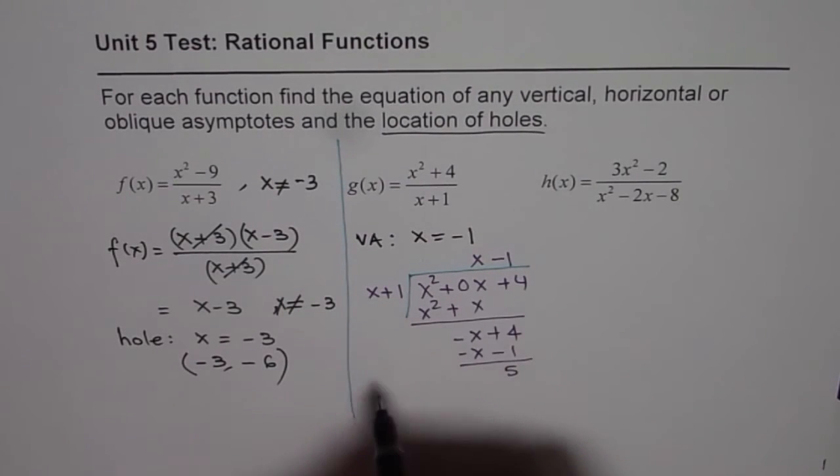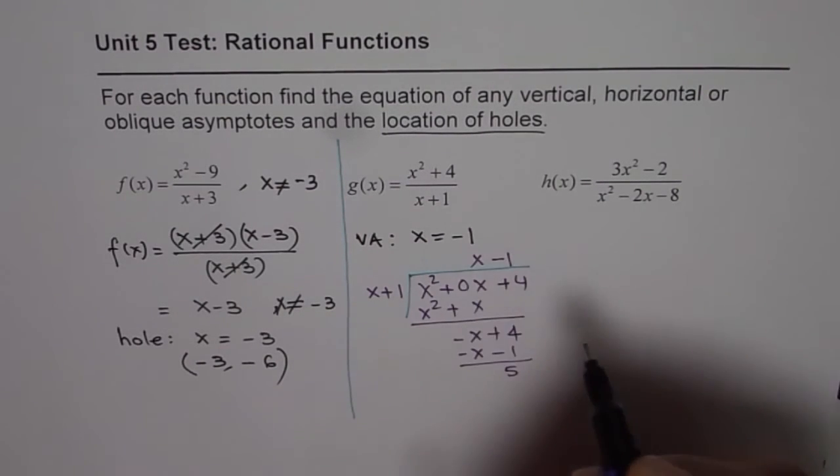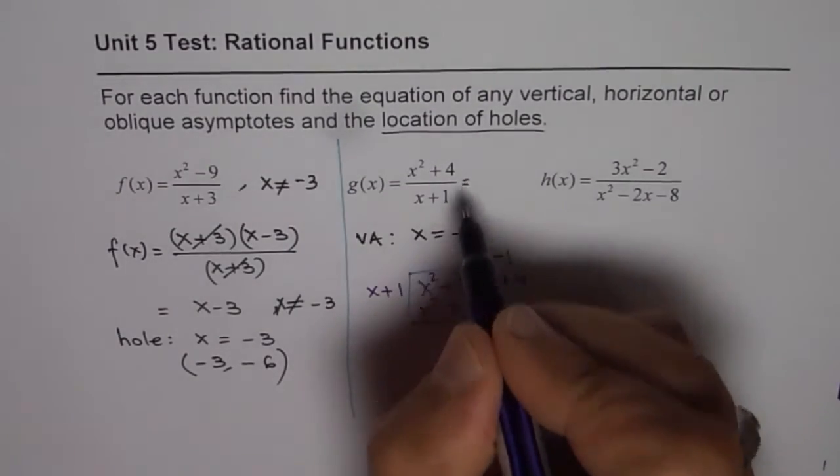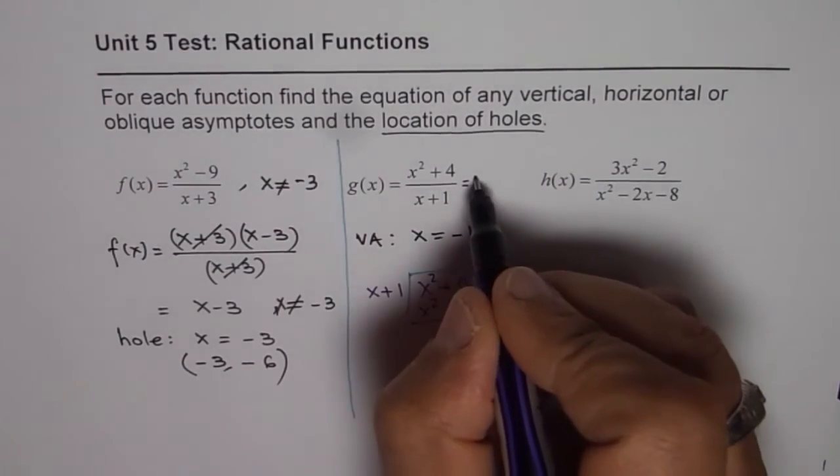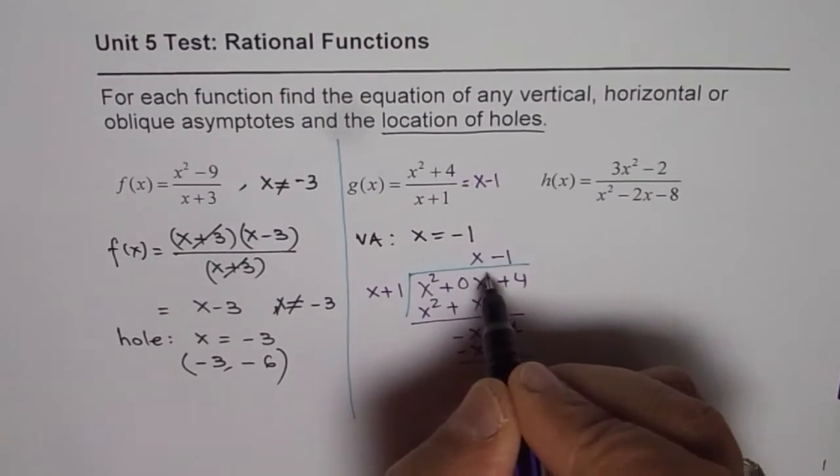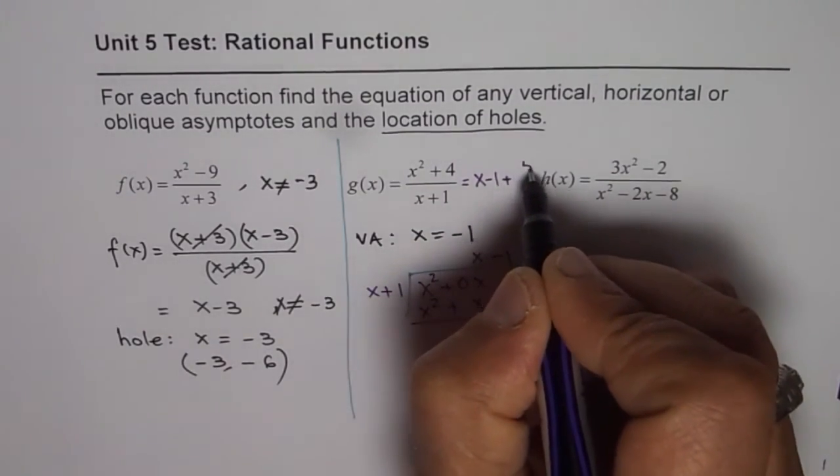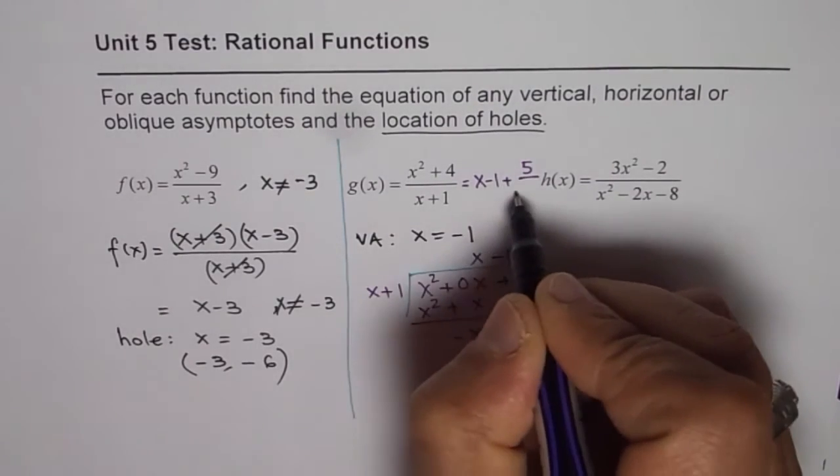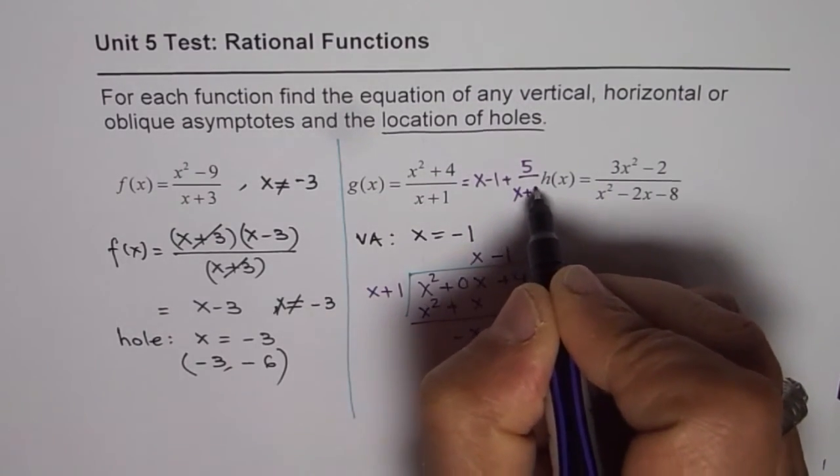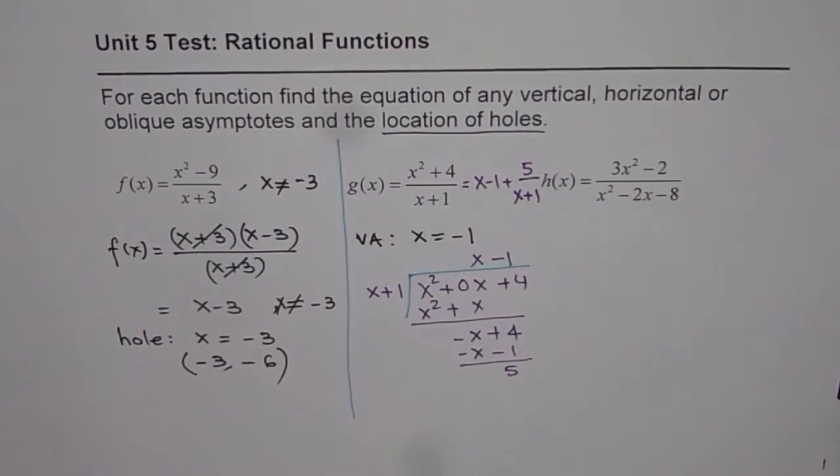And therefore, I can write g of x as, let me write it here itself. x minus 1, that is a quotient, and the remainder is 5. So we will say plus 5 over x plus 5, x plus 1. So that is how we can write.